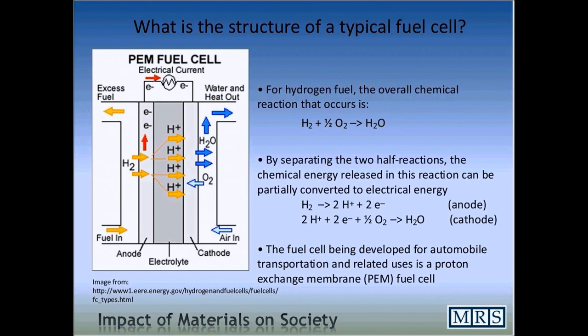One half reaction takes place at the anode and involves the production of protons and electrons from hydrogen — recalling that a hydrogen atom is just a proton plus an electron. The second chemical reaction takes place at the cathode and brings the protons, the electrons, and an oxygen molecule back together to form water.